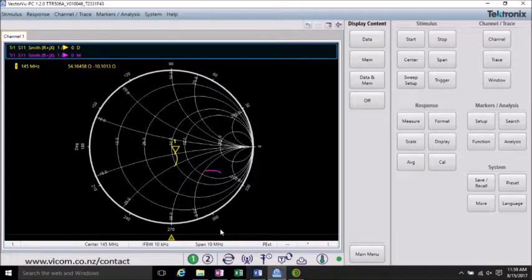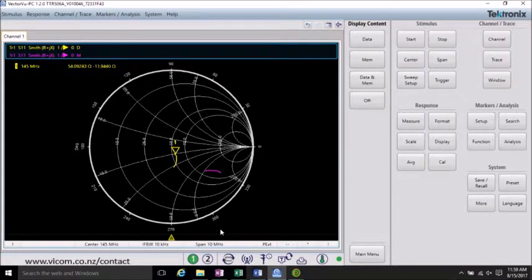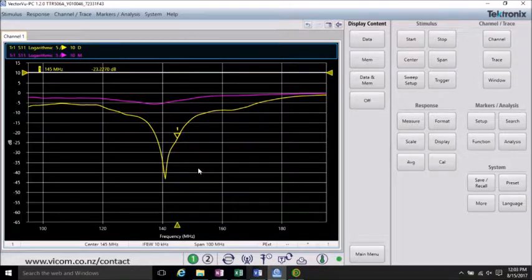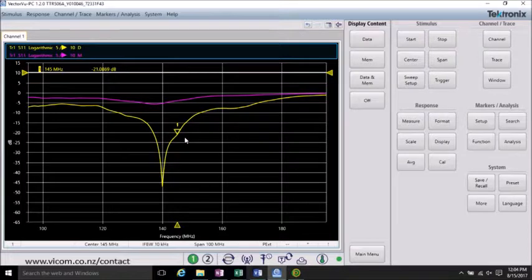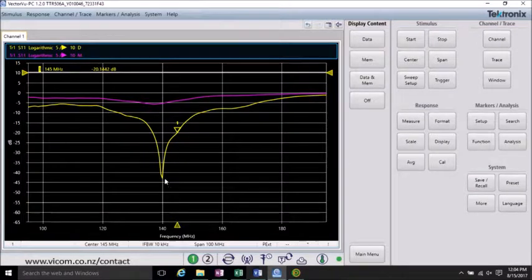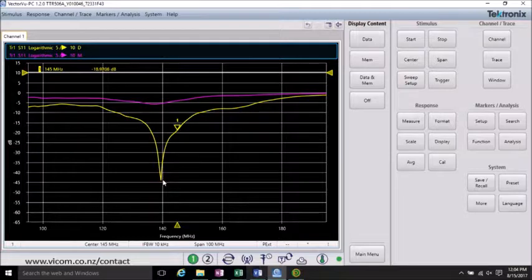And we can look at the difference between the unmatched case and the matched case by looking at the log magnitude. So, now I'm comparing the difference between the unmatched case, which is in purple, with the fully matched case. And you can see that there's significant improvement in how much power is being reflected. And you can see we didn't match perfectly.